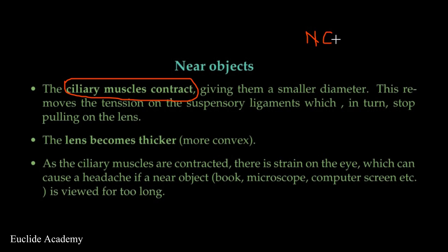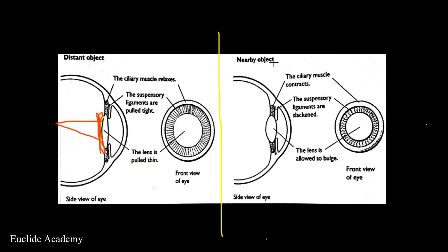So when you're looking at near objects, the ciliary muscles contract and the lens becomes thicker. You can remember this as NCT — ciliary muscles contract for a near object, lens becomes thicker. Let's look at the image: this is your eye and this is the lens. The ciliary muscles here are contracting, and the suspensory ligaments become slack. The lens is allowed to bulge, forming like a convex lens — that is for objects which are very near to your eye.